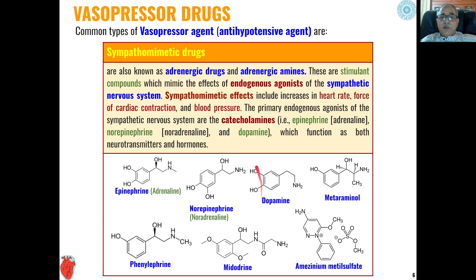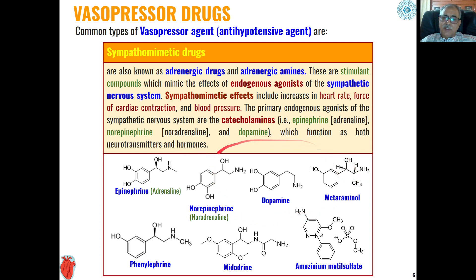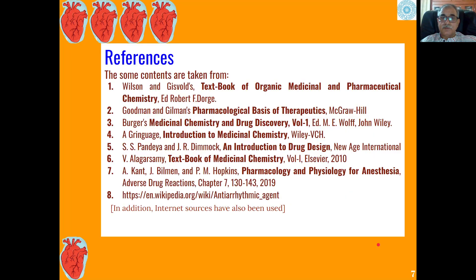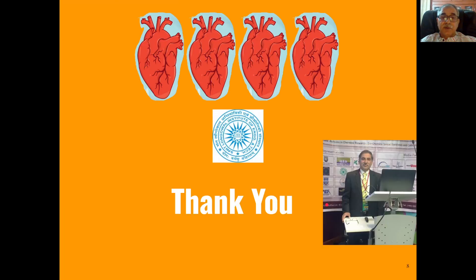Norepinephrine-type compounds function both as neurotransmitters and as hormones, giving them multiple functions applicable in different types of diseases. These represent the vasopressor agents used to raise blood pressure in a patient. Thank you very much.